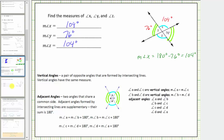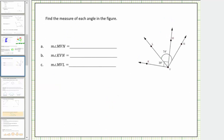Let's look at the second example. Looking at the diagram, notice how we do have a right angle here. Angle KVM is a right angle and measures 90 degrees. We're also given that the measure of angle LVN is 74 degrees and the measure of angle KVL is 39 degrees.